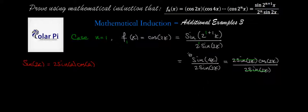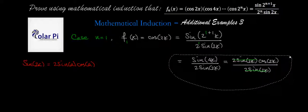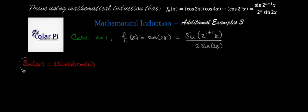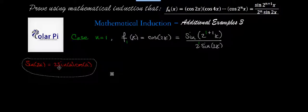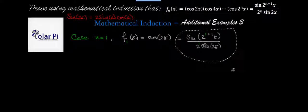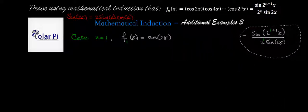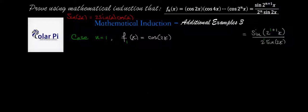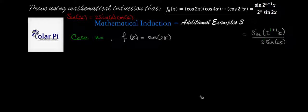So next we go to the inductive step, which is where n is equal to k. I want to save myself some writing, and we need the double angle identity for sine again later, so I'll keep that. The inductive step is rewriting the original statement where we replace n with k.